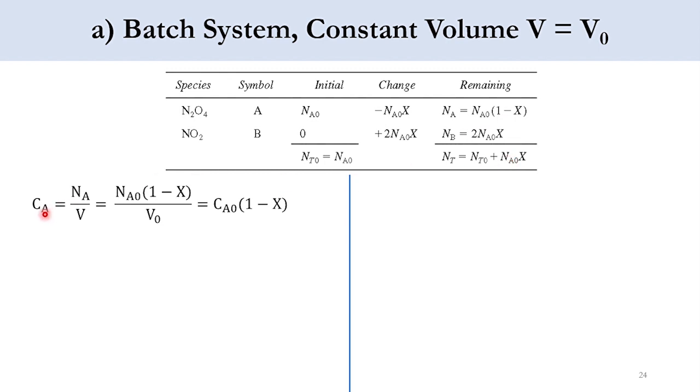Now we know that C_A is equal to N_A over V. We have derived that expression previously, and the number of moles of A at the outlet is equal to number of moles at the inlet N_A0 into 1 minus the conversion. For constant volume system, V is equal to V_0. Now N_A0 over V_0 goes to C_A0 into 1 minus x.